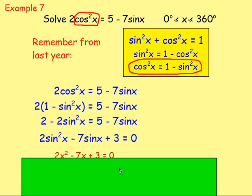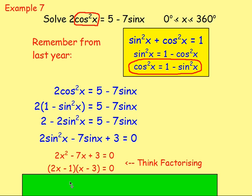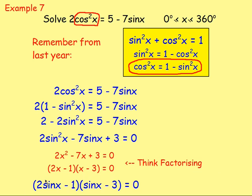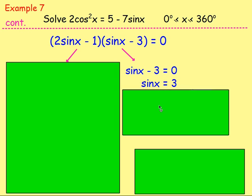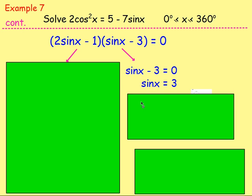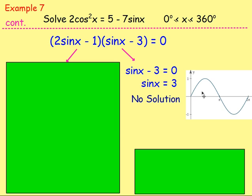You've got sine squared, sine, and a number — so factorize. Swap sine x for x: 2x² minus 7x plus 3 equals zero, which factorizes as (2x minus 1)(x minus 3). Replace x back with sine x to get (2sinx minus 1)(sinx minus 3) equals zero. Setting sinx minus 3 = 0 gives sinx = 3 — no solution, since the maximum of sine is one.